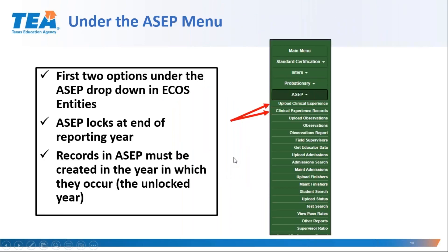The new clinical experience records pages are located as the first two menu options under the ASEP drop-down menu in the ECOS entity screen, just above the current observation pages. There is an upload option similar to the upload options that exist for observations, admissions, and finisher records. The clinical experience records option allows you to create a record for one candidate manually, or to locate a record for one candidate, or to generate a report of records for multiple candidates.